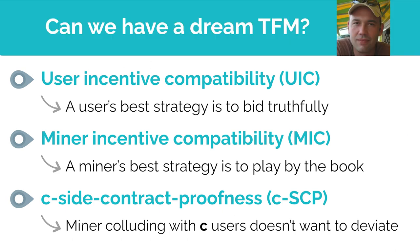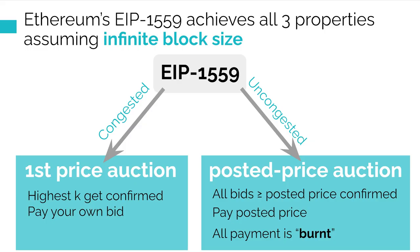Tim started this line of work and asked an interesting open question: can we have a dream transaction fee mechanism satisfying all three properties? What's interesting is that looking at all existing works, there is actually no mechanism that is the dream mechanism. The closest we have come to achieving all three properties is Ethereum's EIP-1559, which was rolled out in August of last year, and Tim was invited to do an extensive analysis of the scheme.